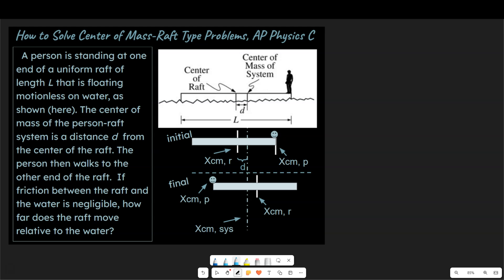So notice that there is an offset. There's an offset from the center of the raft to the center of mass of the system, and the person then walks to the other end of the raft. So he walks from right to left. If friction between the raft and the water is negligible, how far does the raft move relative to the water?